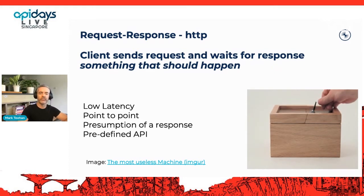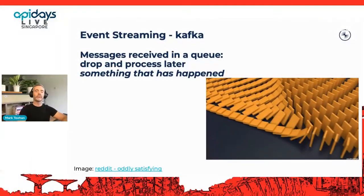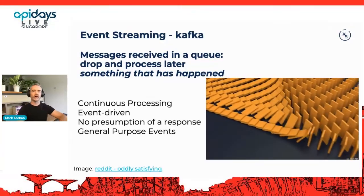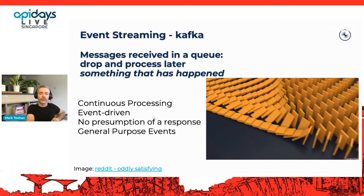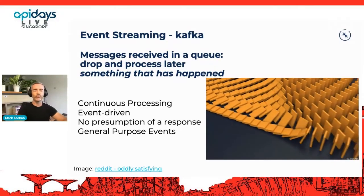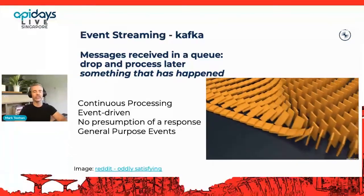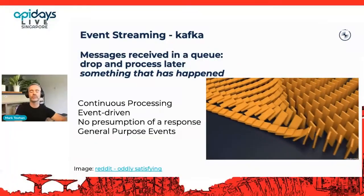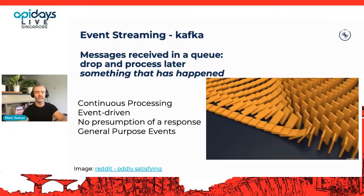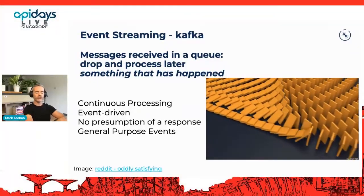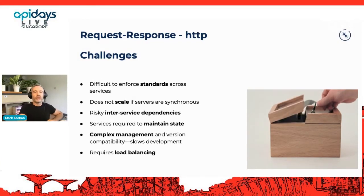Request-response is an HTTP call where your client sends a request and waits for a response — you're notifying something that should happen on the system. These are generally low latency, point-to-point, with a presumption of a response, and use a predefined API. Event streaming, by contrast, is continuous processing — messages are received into a topic and the producer drops the message without caring when it will be processed. It may be consumed by one or many consumers. The producer is notifying something that has already happened, and there's no presumption of a response.